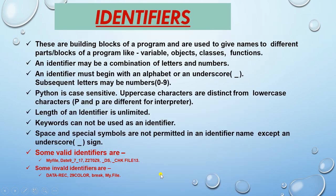Next is identifiers. Identifiers are also very important — you have to know how to write any identifier. Even in board exams, there is a question where you have to identify valid and invalid identifiers. Identifiers are the building blocks of a program used to give names to different parts such as variables, objects, classes, and functions. An identifier may be a combination of letters and numbers, and must begin with an alphabet or an underscore.